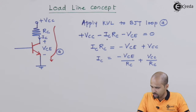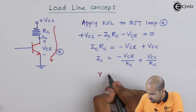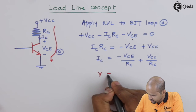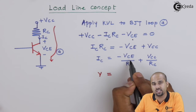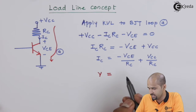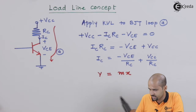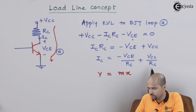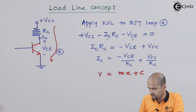If we consider the value of IC as Y, and equate this with minus VCE — taking VCE as X and minus 1/RC as M — then I can say it will be MX. And the constant term, VCC/RC, which consists of given parameters, is nothing but C.